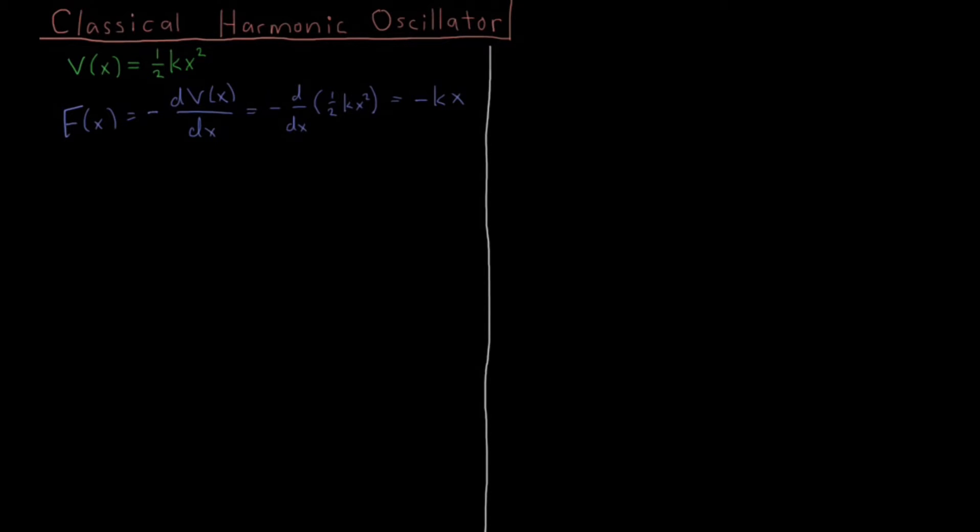Newton's equations give us that mass times acceleration, which is the second derivative of position with respect to time, equals force. Force equals mass times acceleration, F equals ma. Plugging in minus kx there, we get that following relation.